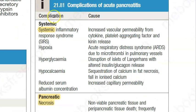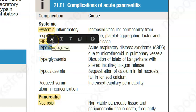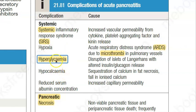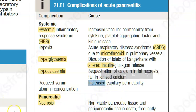Systemic complications include SIRS — systemic inflammatory response syndrome. Hypoxia and acute respiratory distress syndrome can occur due to microthrombi in the pulmonary vessels. Hyperglycemia occurs because of disruption of insulin secretion. Hypocalcemia is thought to result from sequestration of calcium in areas of fat necrosis. Reduced serum albumin occurs due to increased capillary permeability.